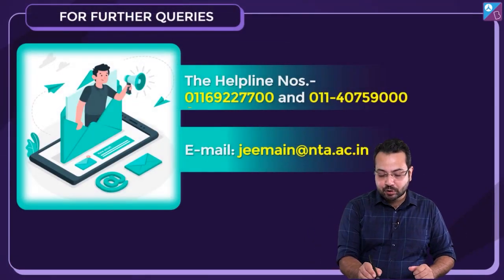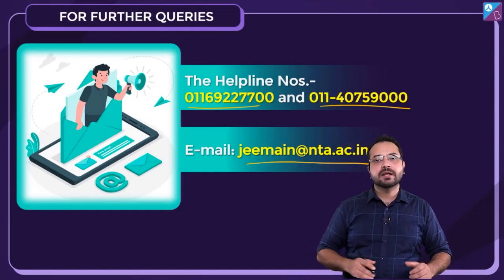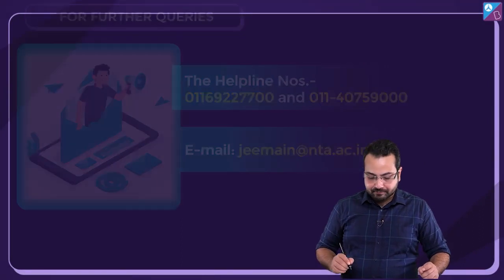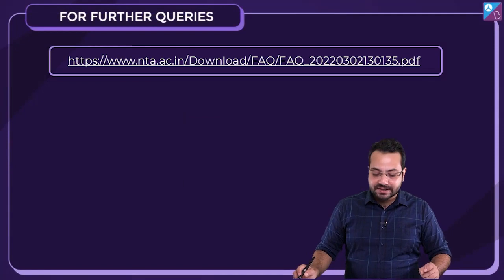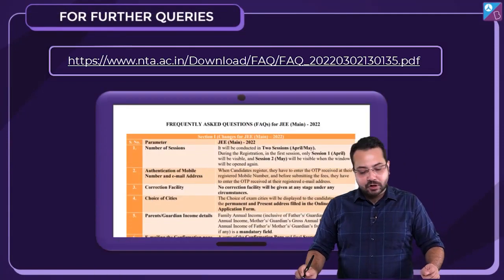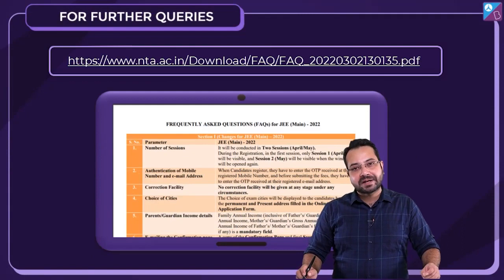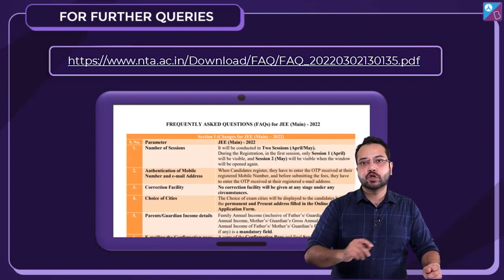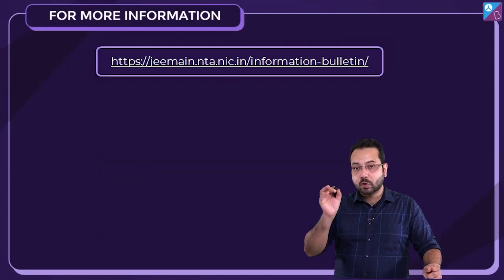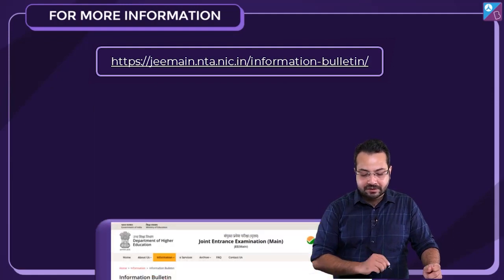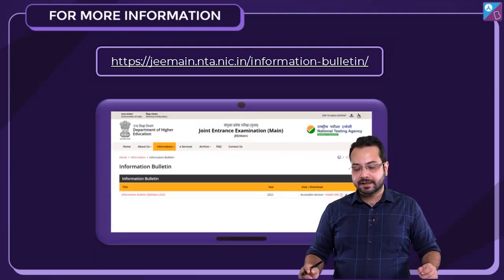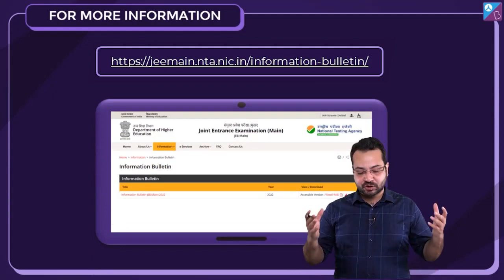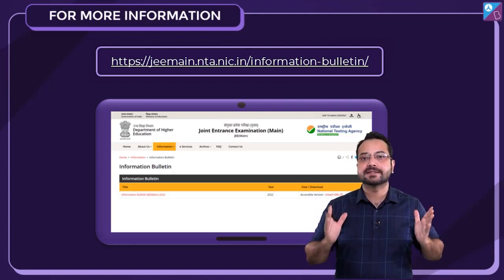Helpline numbers are also available — make a note of these numbers and the email address if you have any confusion or questions. NTA also provides FAQs which you can check out; the link is in the description box. You can also download the information bulletin from the link in the description box.